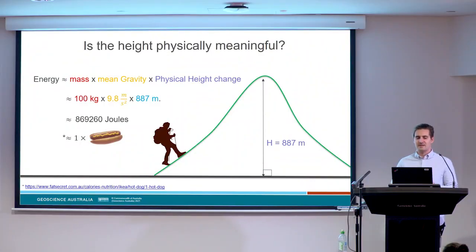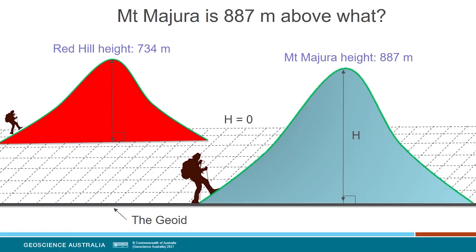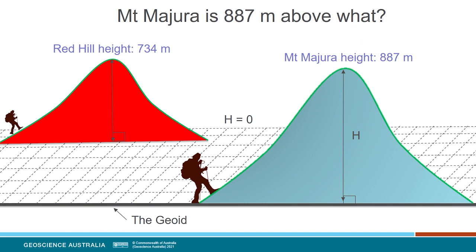The next question I had was: 887 metres above what? To be able to say whether Mount Majura is taller than Red Hill, the heights need to be referenced to a common surface — a place where heights are zero everywhere. If you're able to walk over this surface, you would never feel like you were going up or downhill; it should be perfectly flat and level in relation to the Earth's gravity field. There are infinitely many of these surfaces, one on top of the other, but one of them aligns best with mean sea level, and we call it the geoid. You can kind of think of the geoid as a model of where sea level should be on shore. The geoid, or some approximation to it, is normally the surface being referenced when you see a sign with X metres above sea level on it.